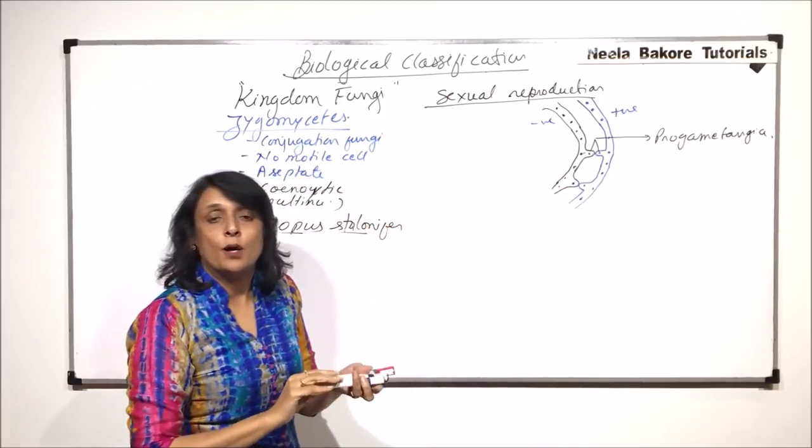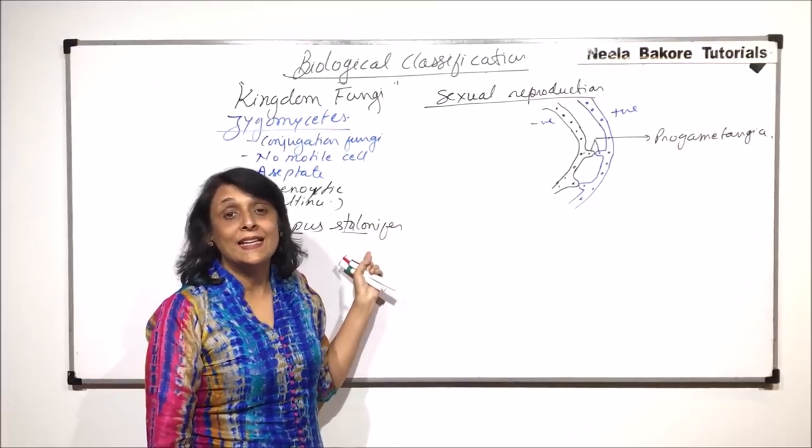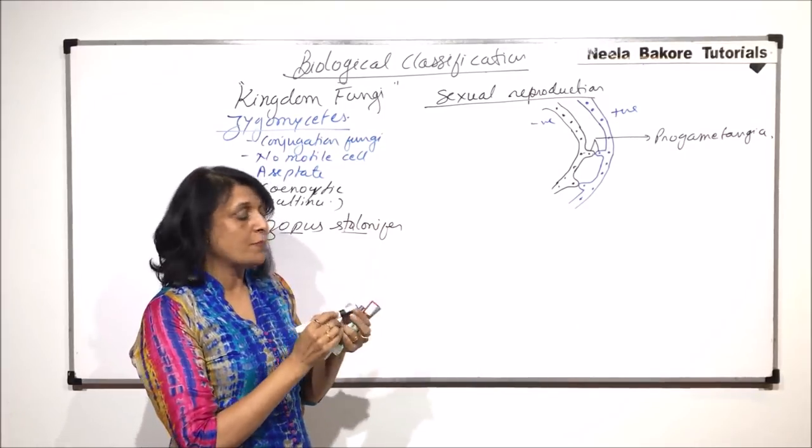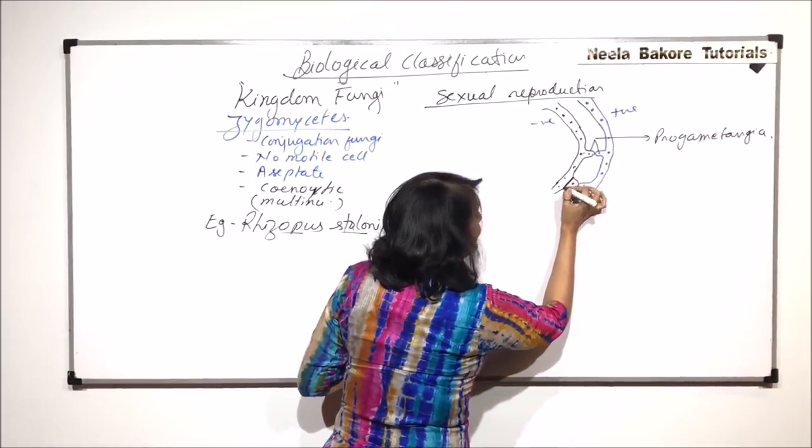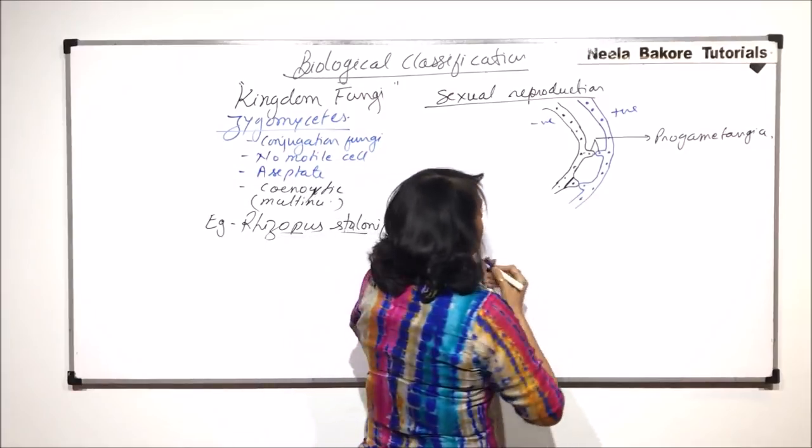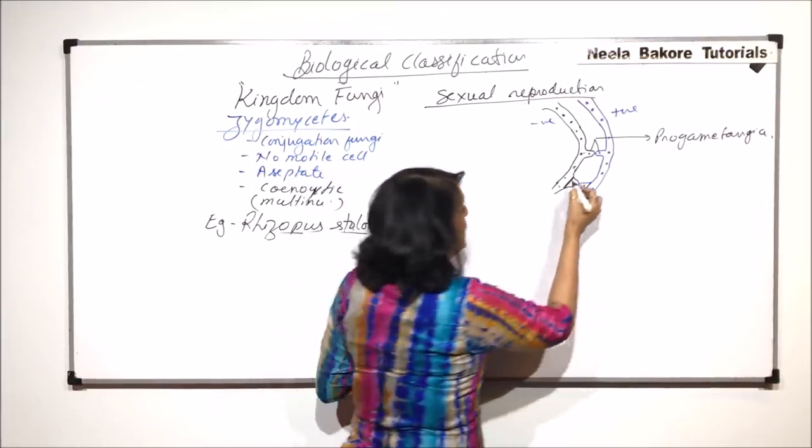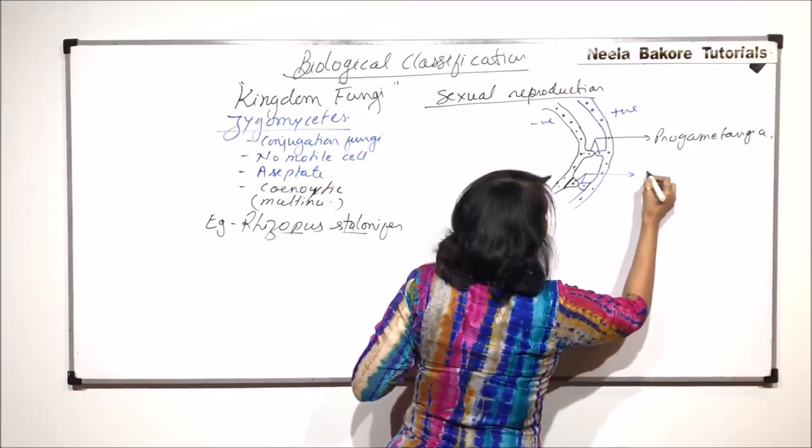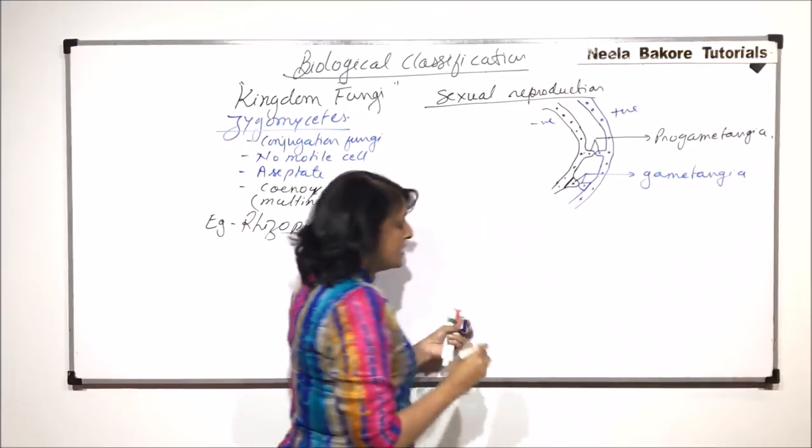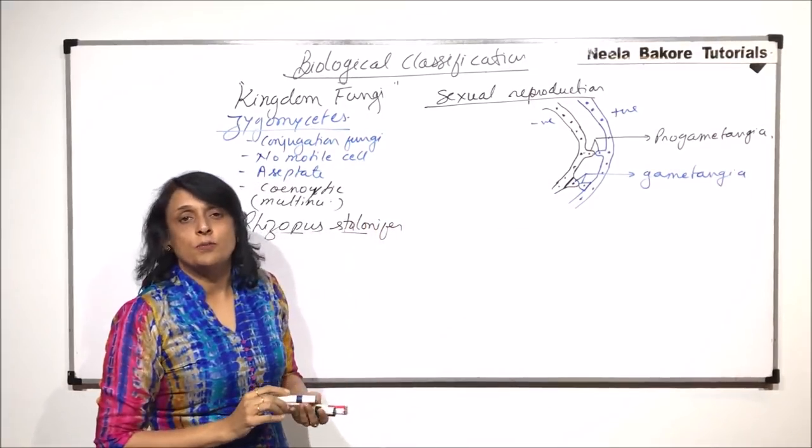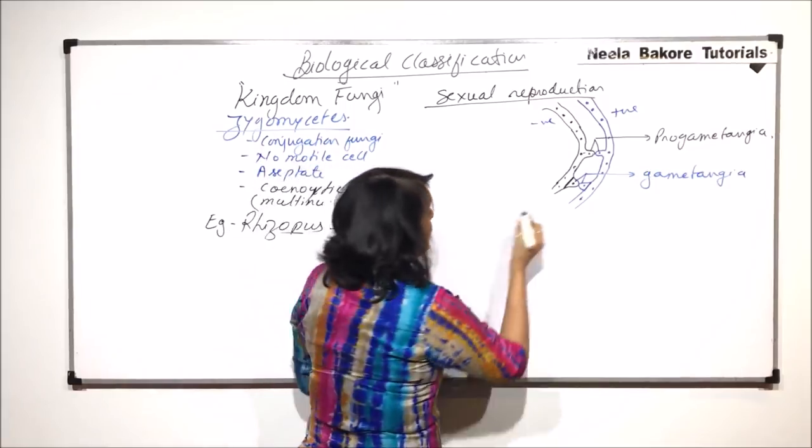Now, there is a septum formation. In case of zygomycetes, the hyphae are aseptate. But there is a septum formation in this region. And after this septum is formed, each segment is going to act as a gametangia. So now we start calling it gametangia. And this is what is called the conjugation process. Up till now, the two nuclei have not fused.